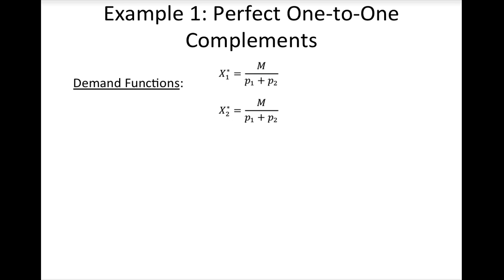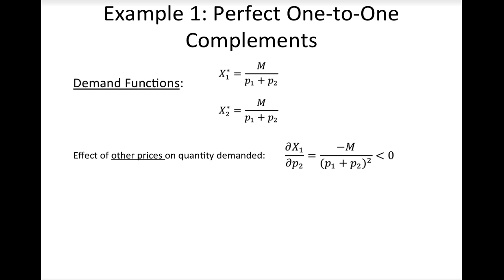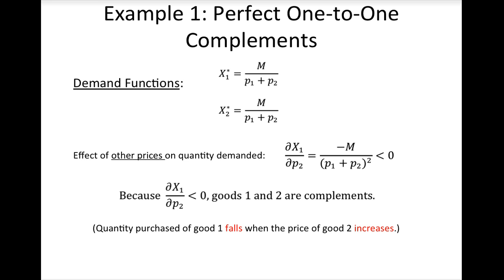The last bit of comparative static analysis is to examine the effect of other prices on a consumer's demand. Taking the partial derivative of the demand function for good 1 with respect to the price of good 2 yields an expression that is unambiguously negative. Because the demand for good 1 falls when the price of good 2 increases, we know that goods 1 and 2 are complements.